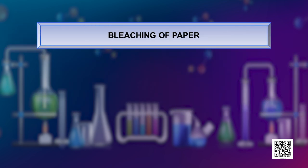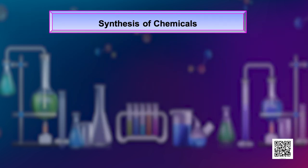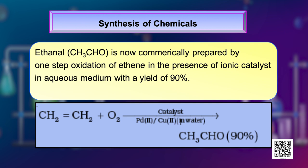The second case is that of bleaching of paper. Earlier chlorine gas was used for this purpose. These days hydrogen peroxide with suitable catalyst, which promotes the bleaching action, is being used. For synthesis of chemicals, for example, ethanol is now commercially prepared by one-step oxidation of ethene in the presence of an ionic catalyst in aqueous medium to yield 90 percent of the desired product. This is shown in the reaction here.